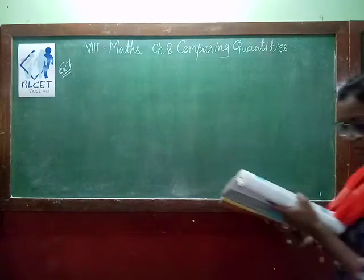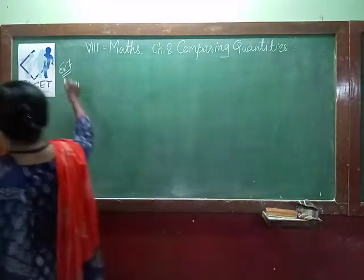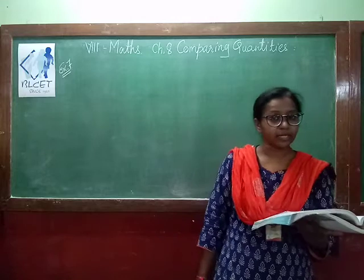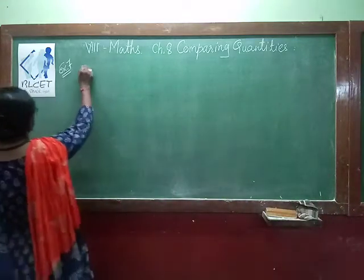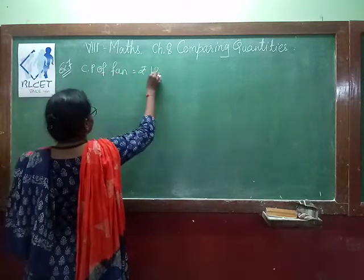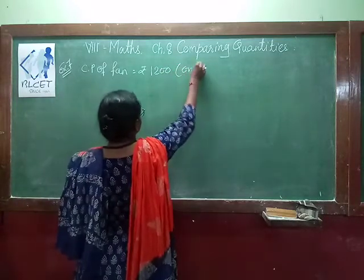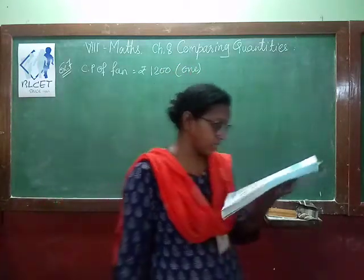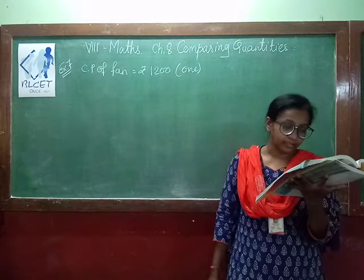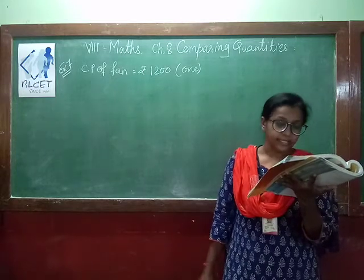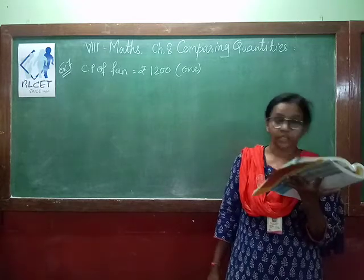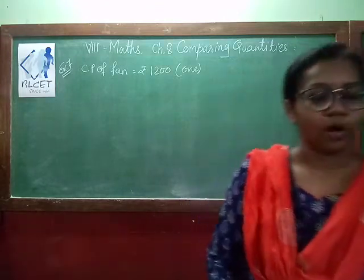Let's see the next solved example. Example 7: Milu bought 2 fans for Rs.1200 each. The cost price of each fan is Rs.1200. One is sold at a loss of 5% and the other at a profit of 10%. Find the selling price of each, and also find out the total profit or loss.